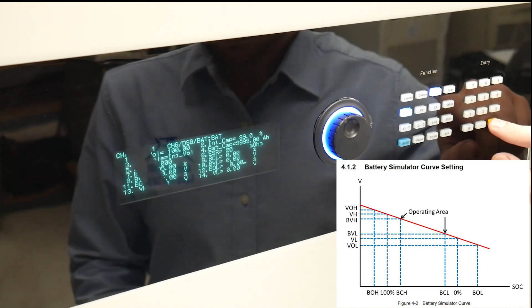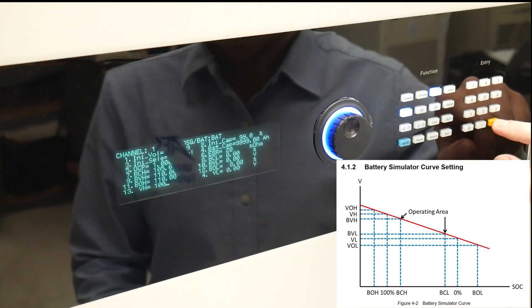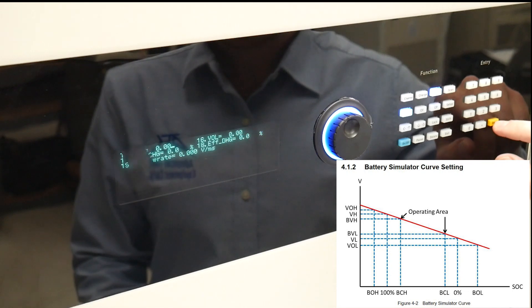There are over limits for both of these seen as VOH voltage over high and BOH battery over high, and low limits VOL voltage over low and BOL battery over low.